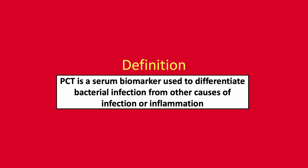Procalcitonin, or PCT, is a 116 amino acid glycopeptide, first identified in 1984, but it wasn't until 1993 when Ascot et al. reported a relationship between PCT elevation and sepsis in bacterial infections. It's defined as a serum biomarker to help differentiate bacterial infection from other causes of infection or inflammation.